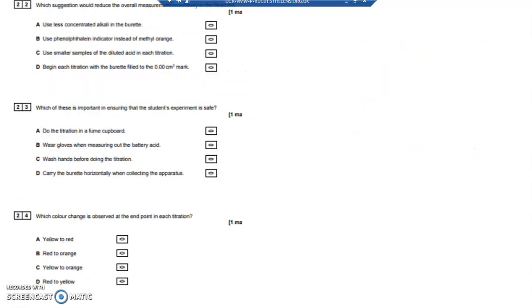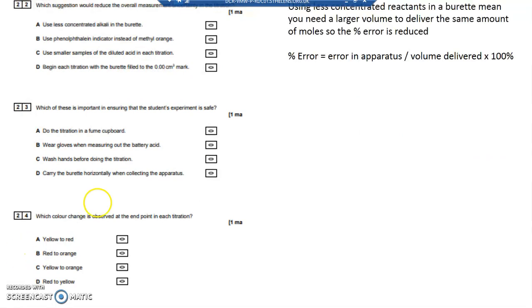Which suggestion would reduce the overall measurement error? Using less concentrated reactants in the burette means that you need a larger volume to deliver the same amount of moles, so the percentage error is reduced. Your answer is A, using less concentrated alkali in the burette.